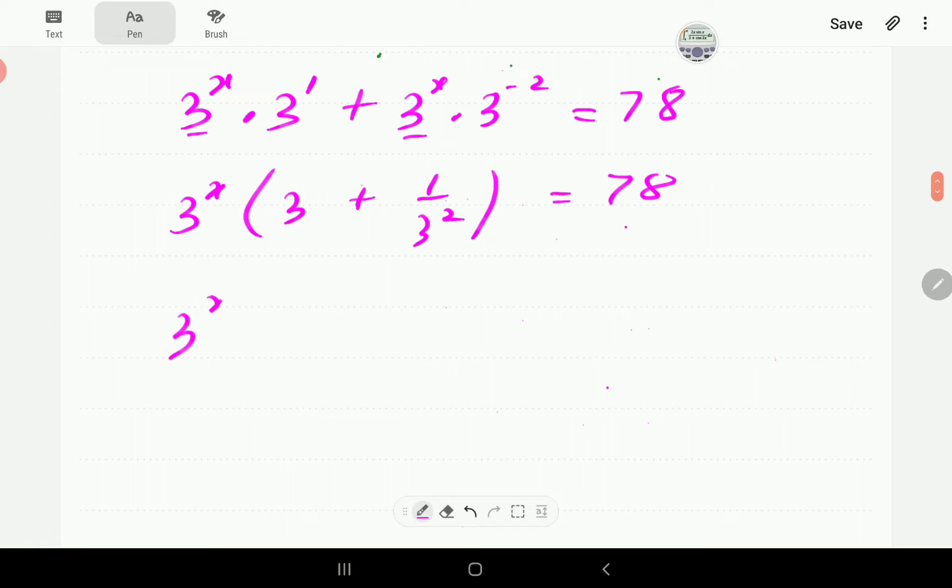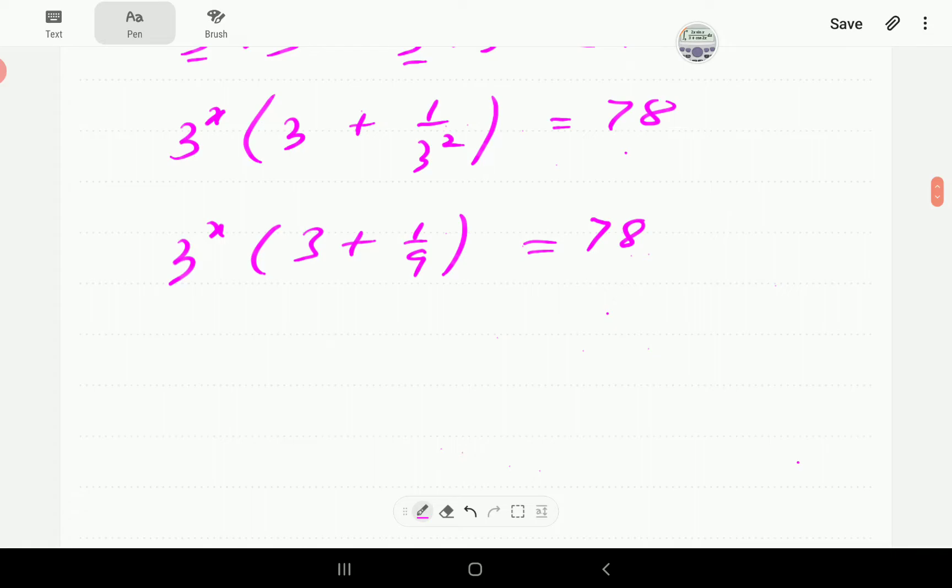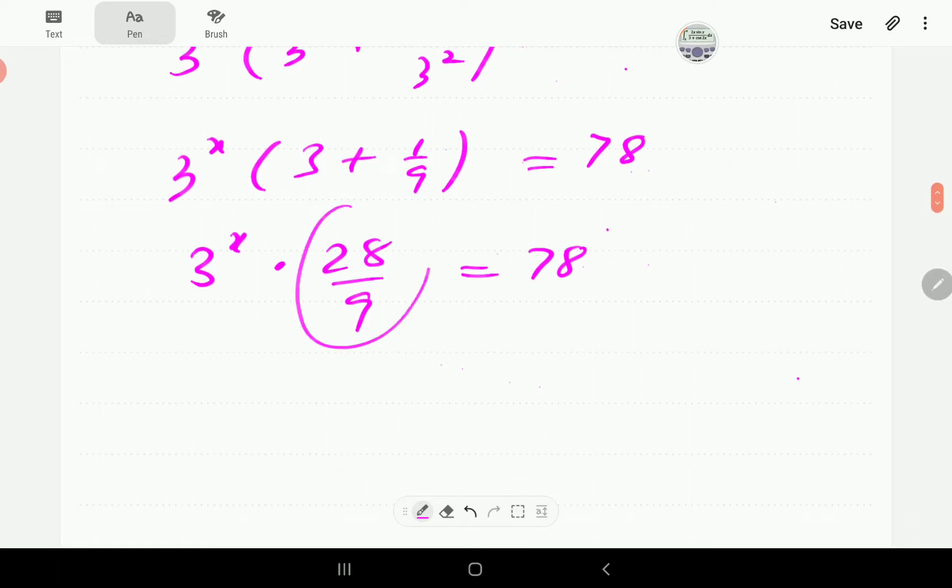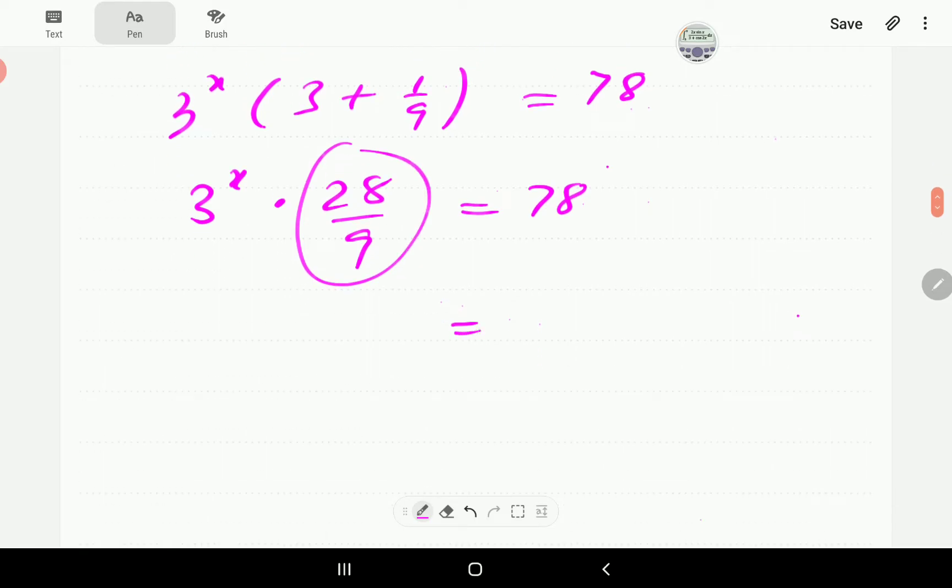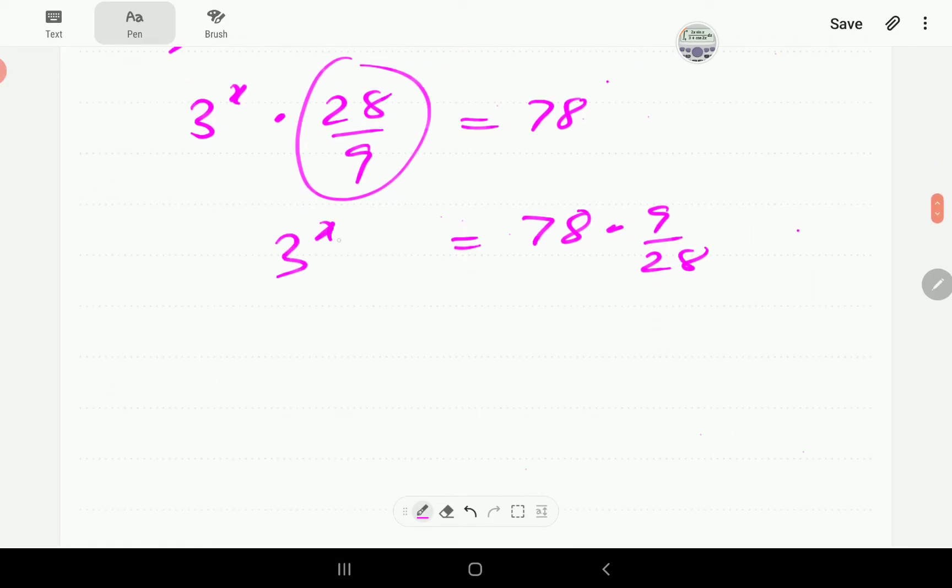So this is the same as 3^x into 3 plus 1 over 9. So 3 plus 1 over 9 is the same as 27 plus 1 over 9, which is 28 over 9. So this is now a two term equation, as you can see. And then what we're going to do is we're going to take this term straight to the right-hand side.